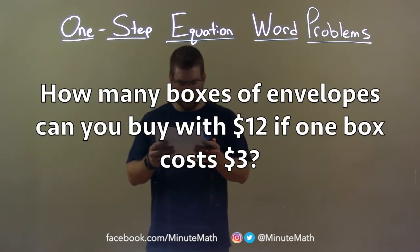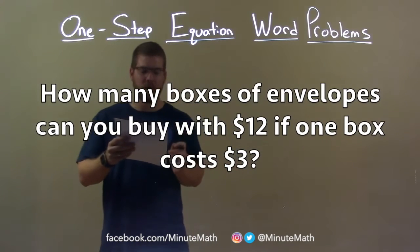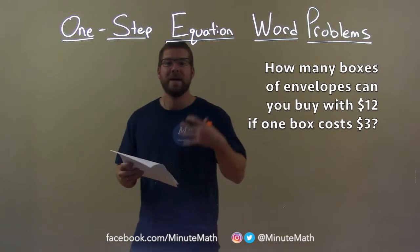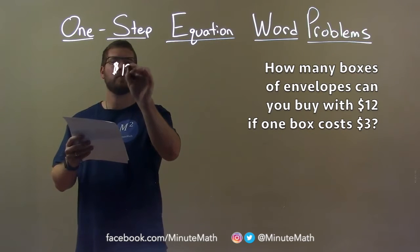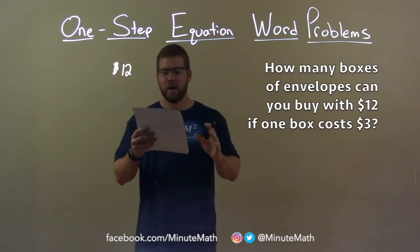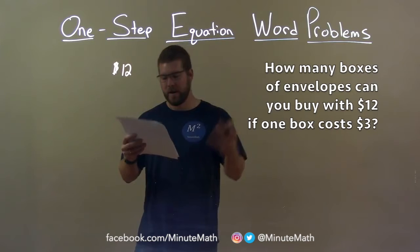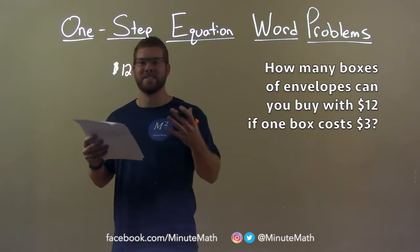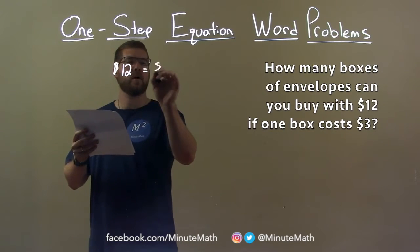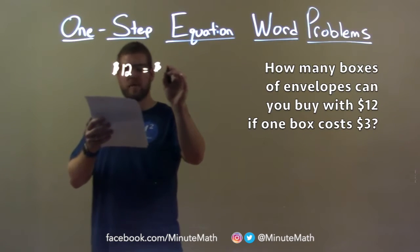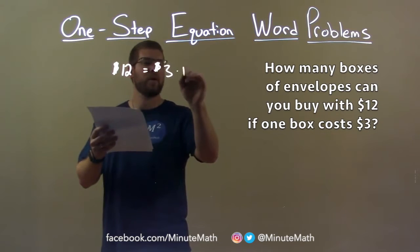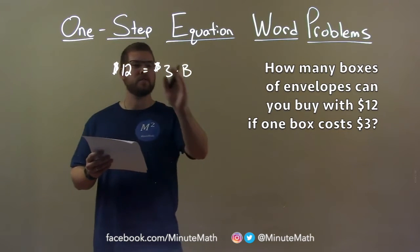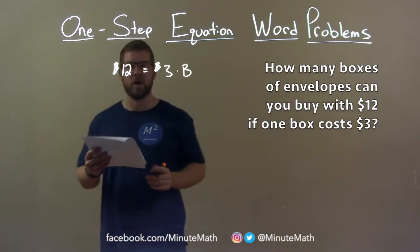How many boxes of envelopes can you buy with $12 if one box costs $3? We want to create an equation: $12 equals the cost of each box, $3, multiplied by the number of boxes, B.